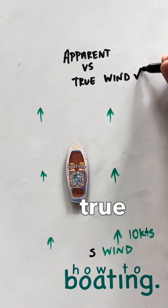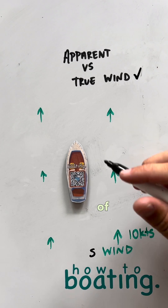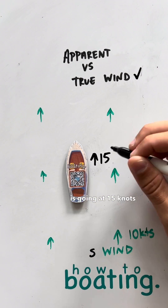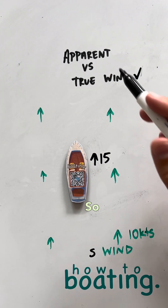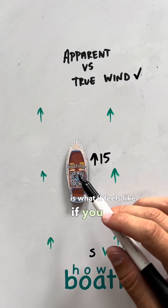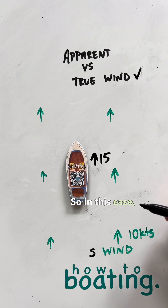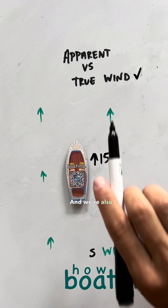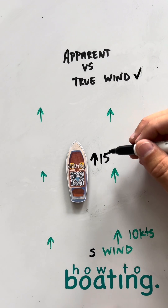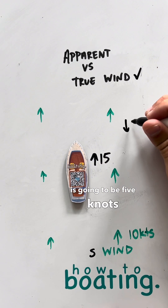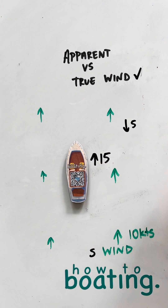True wind combined with boat speed — we'll say the boat is going at 15 knots in the same direction as the wind. The apparent wind is what it feels like if you were sitting on the boat. With 10 knots of wind moving that way and the boat also moving that way at 15 knots, the apparent wind is going to be five knots.